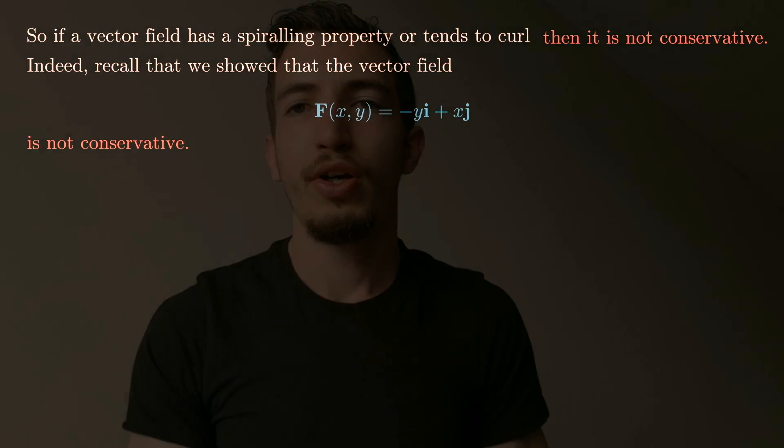To recap: a vector field is a function assigning a vector to every point; the theory applies in R2, R3, or any dimension. We looked at many examples, and focused on conservative vector fields — those given by the gradient of a smooth potential function. One key obstruction to being conservative is the spiraling phenomenon: if a vector field spirals, it's not conservative. Like and subscribe, and leave questions in the comments!